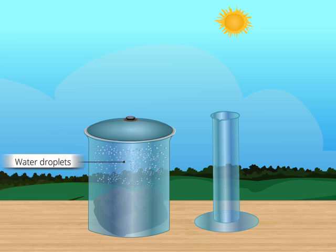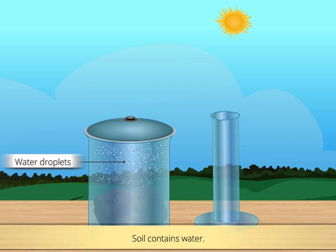We can see tiny droplets of water inside the container on its lid. This means soil contains water. Due to heat of sunlight, water drops appeared on the container.